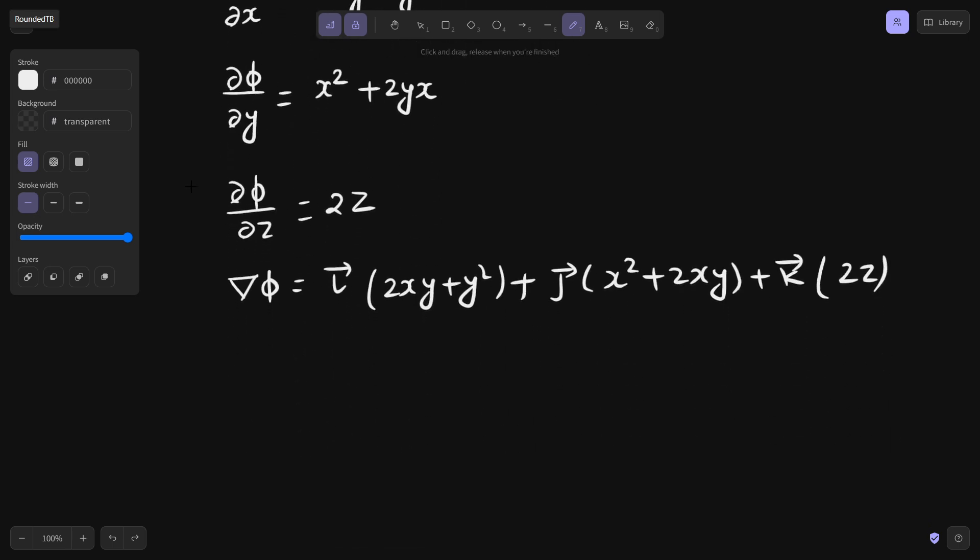Now, because they want this value at (1,1,1), let's put in the values. If you put x and y as 1, you get 2 plus 1², so 3. So 3i, plus again 2 plus 1 is 3j, and 2k.